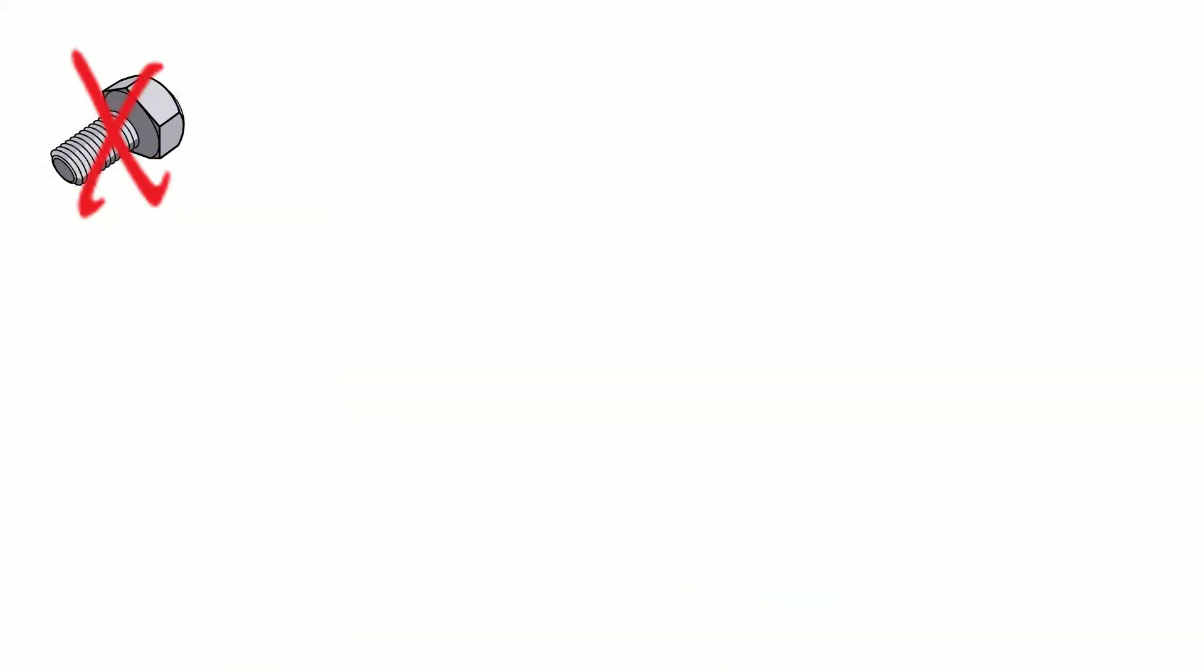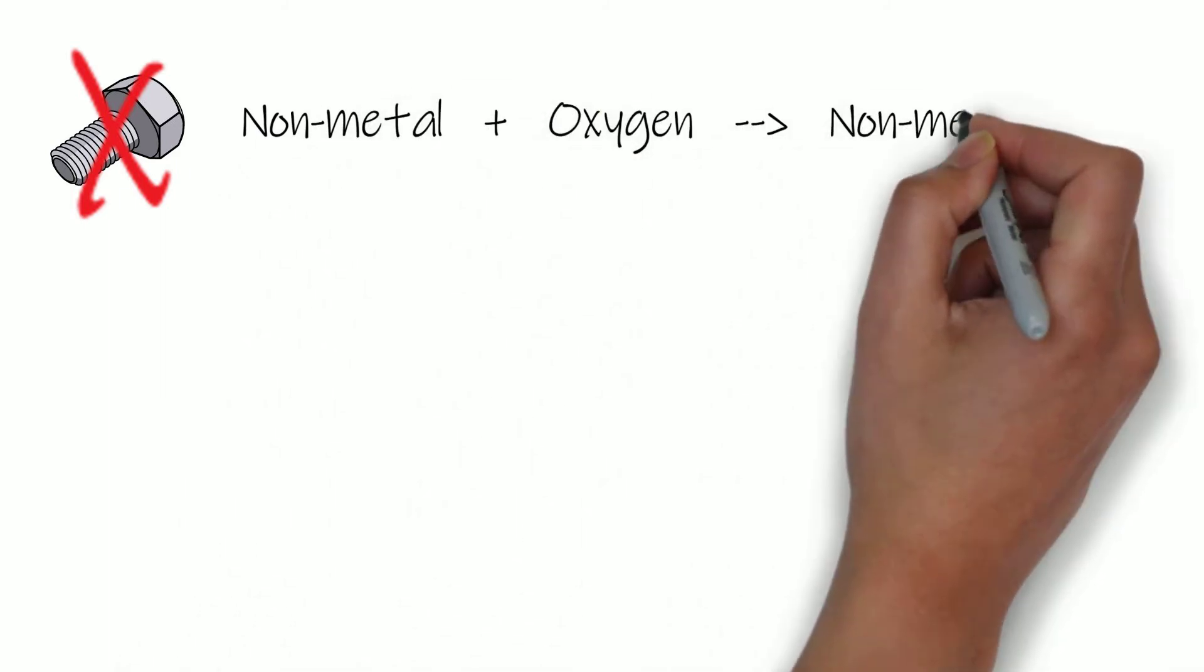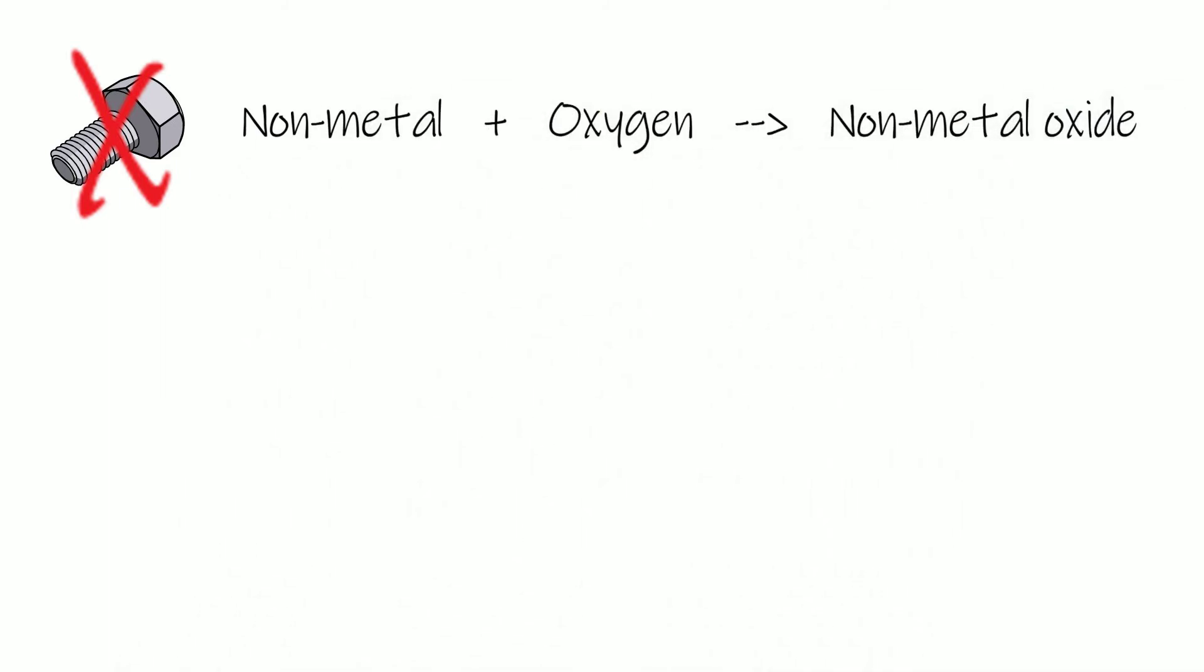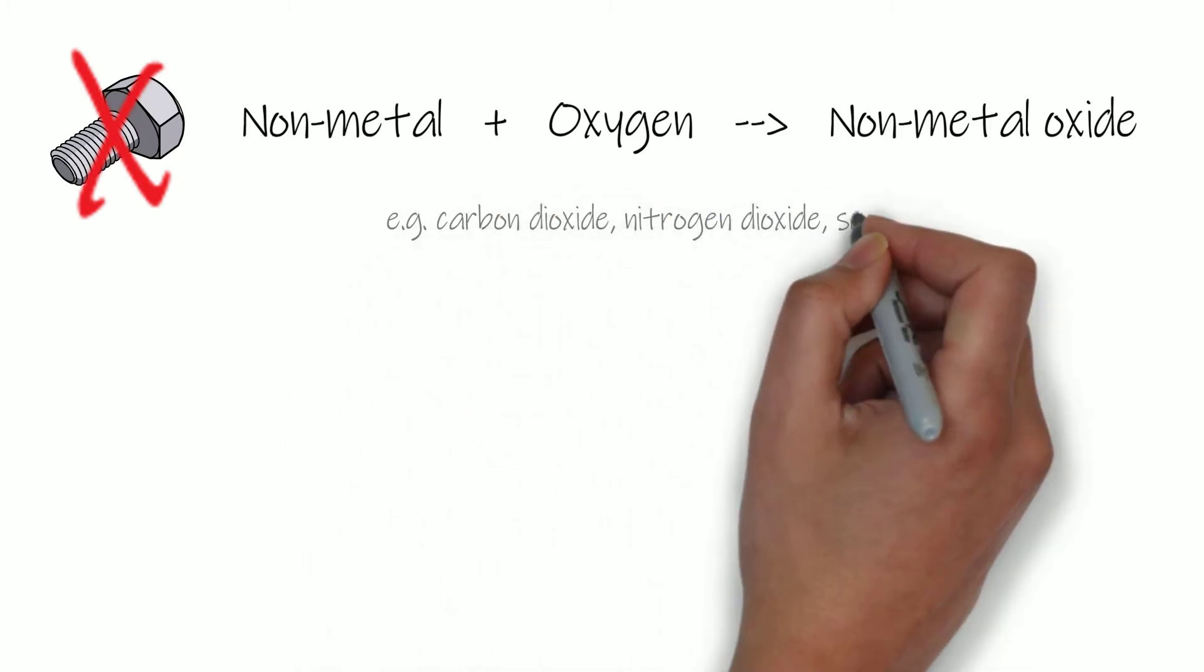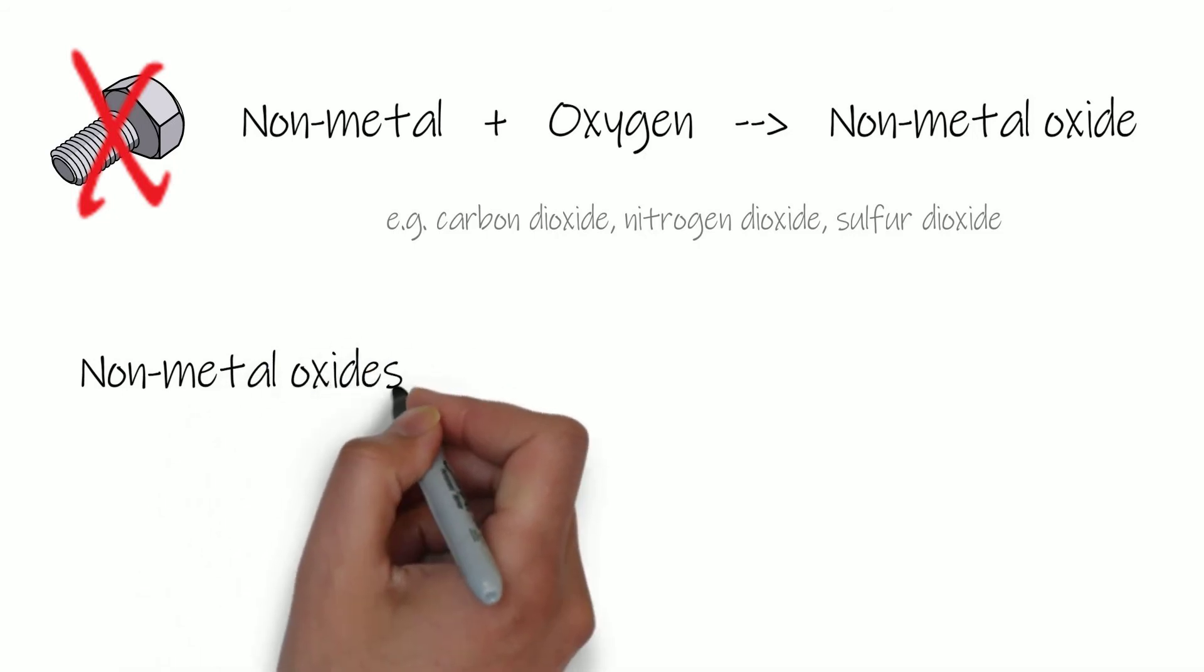Non-metals on the other hand form when a non-metal such as carbon or sulphur reacts with oxygen producing a non-metal oxide. So you could have carbon dioxide, carbon monoxide for example, nitrogen dioxide, nitrogen monoxide, sulphur dioxide.